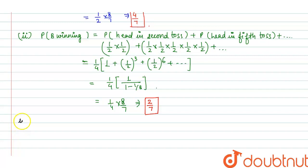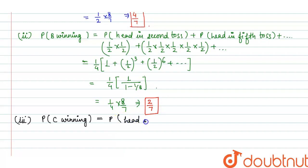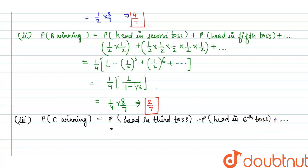Now for the probability of C winning. In the first round, A tosses first and B tosses second, so C gets to toss third. C can win with a head in the third toss, or in the sixth toss as the game continues. So we write: head in third toss is (1/2)^3, and head in sixth toss is (1/2)^6, and so on.